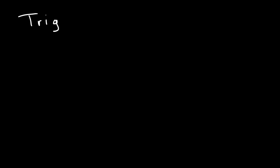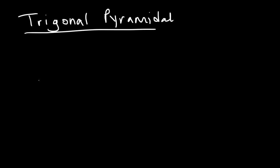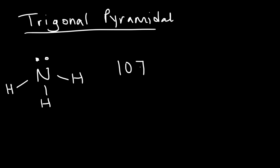Going back to the trigonal pyramidal structure, the bond angle is an important detail. For ammonia, the bond angle is about 107 degrees — make sure you know this because it's a common test question.